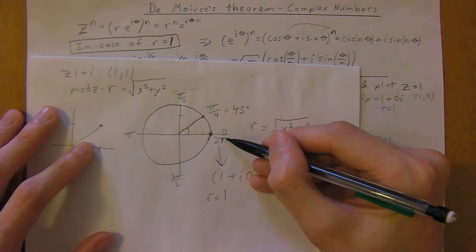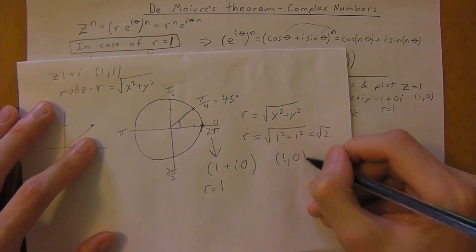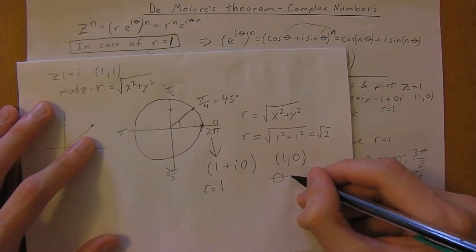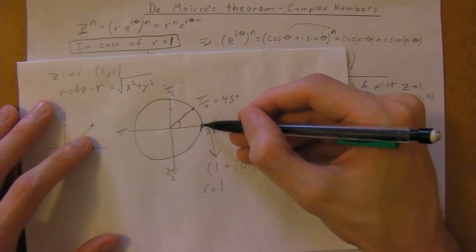Because our point is 1, 0, we know that theta is equal to 2 pi, because you go around the circle once to get to that point.